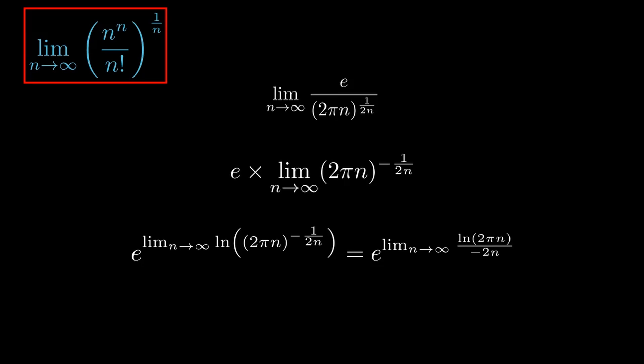So we can apply L'Hopital's rule now to solve this. If we take the derivative of the natural logarithm, it's 1 over its argument multiplied by the derivative of its argument. So we have 1 divided by 2πn, multiplied by 2π, and the derivative of minus 2n is just minus 2.